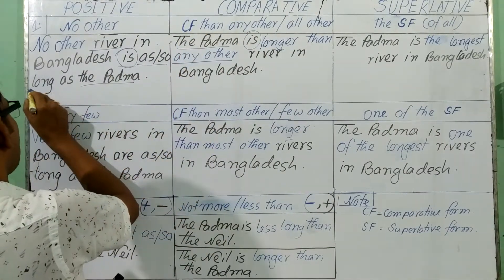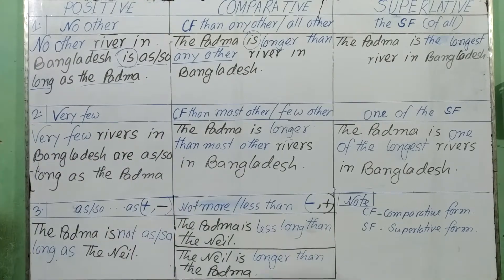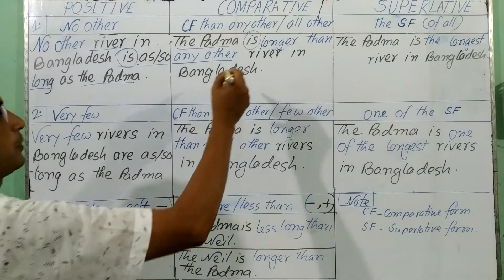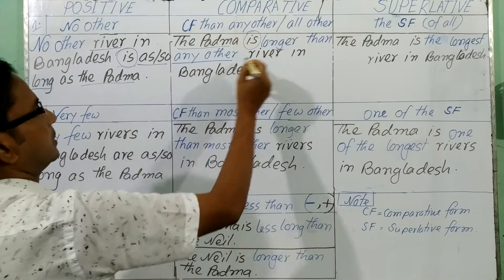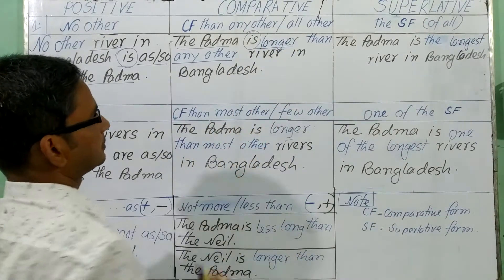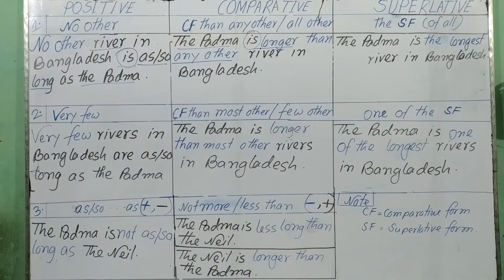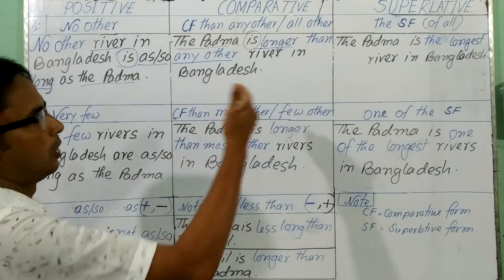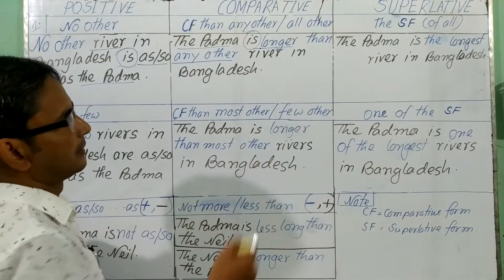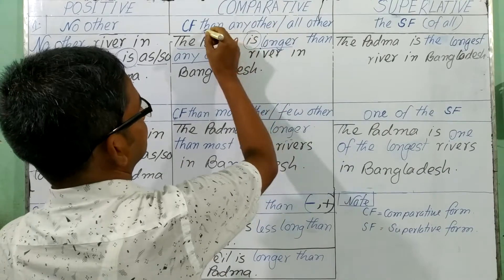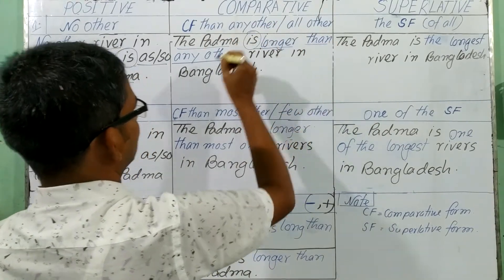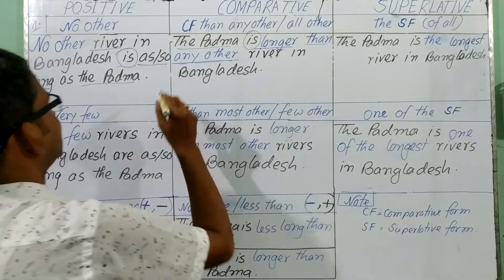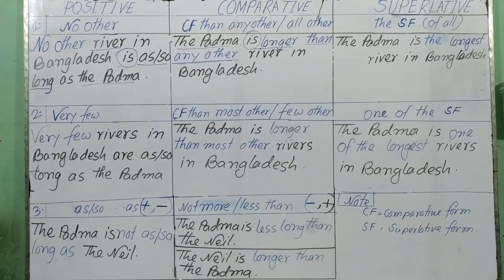CF means comparative form of the describing word. 'Long' — the comparative form of 'long' is 'longer,' because this is one syllable: long, longer, longest. Then, from this rule, comes 'than any other.' The rest of the portion of the sentence will be added after 'than any other.' After 'no other' there is 'river in Bangladesh.'